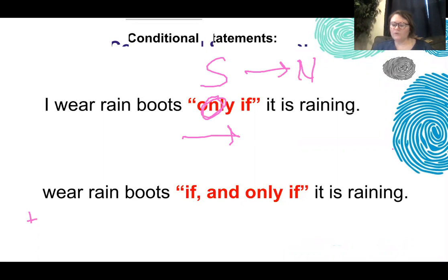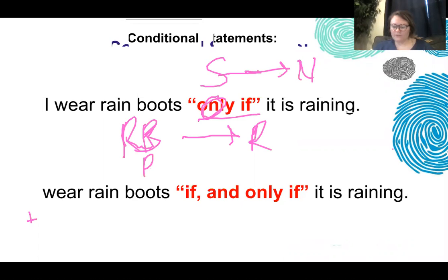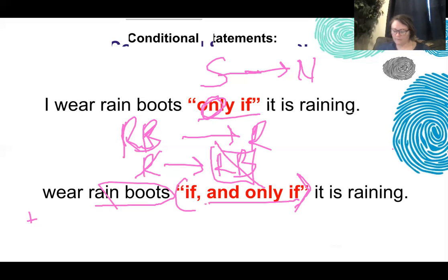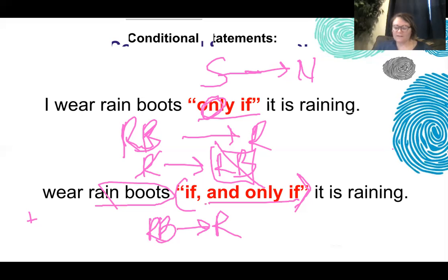With 'only if': I wear rain boots only if it's raining. Wearing rain boots is sufficient to know it's raining. If it's not raining, I know I'm not wearing rain boots. But 'if and only if' means: I wear rain boots if and only if it is raining. This is the only time it happens — nothing else can allow wearing rain boots.